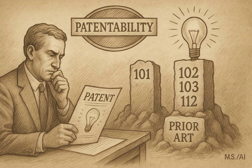Chapter 2100 gets into some trickier areas too, especially these things called judicial exceptions. Abstract ideas, laws of nature, natural phenomena — you can't just patent those things outright. So the MPEP explains how the USPTO figures out if a claim is trying to do that. It lays out the procedures, including the big one: the two-part Alice-Mayo test.